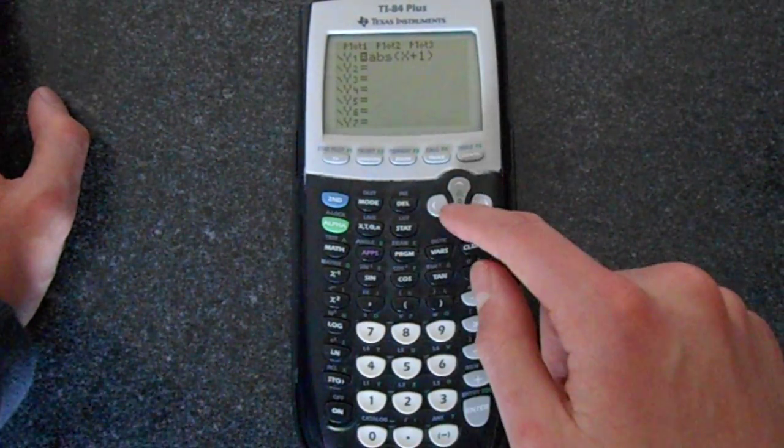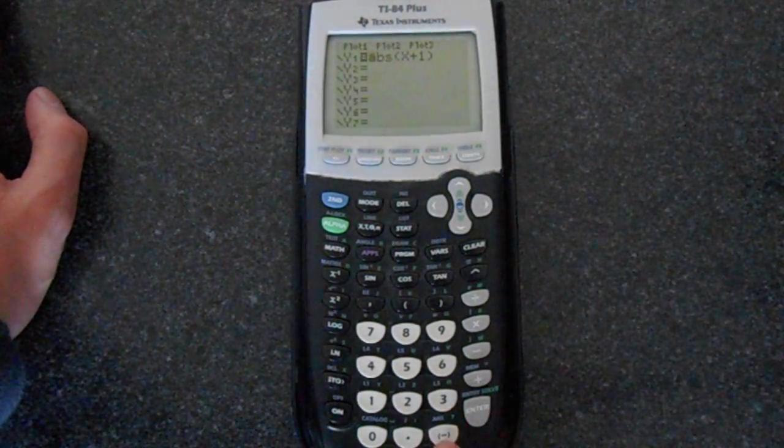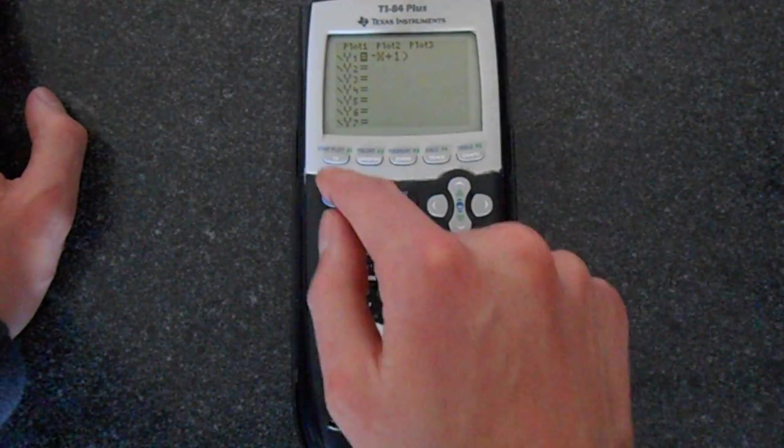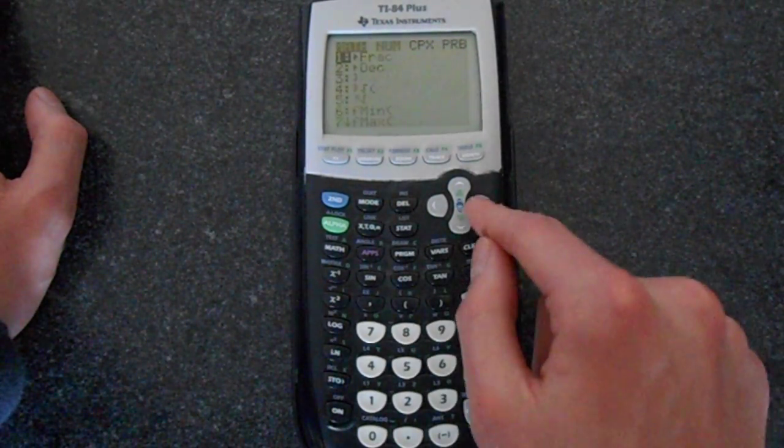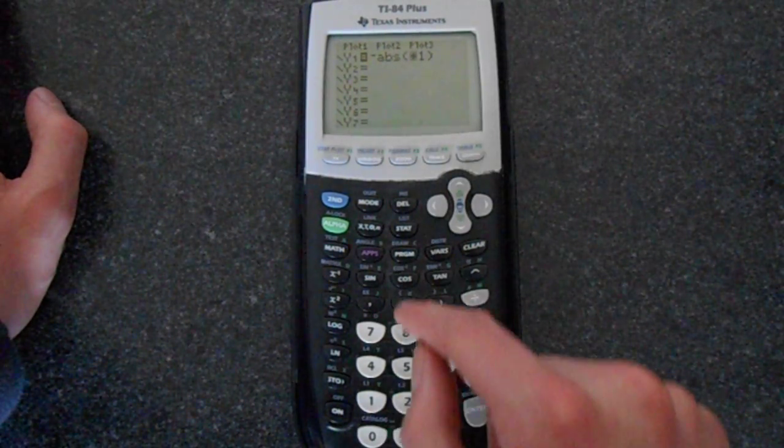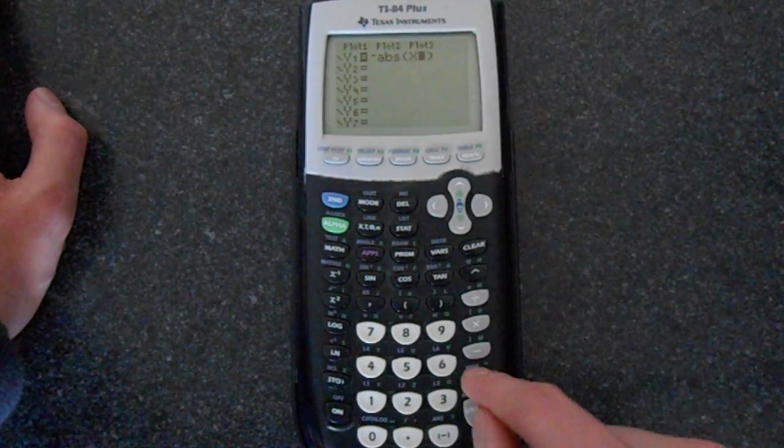Let's imagine we wanted to do negative. So you would use this key here. I'll just type it all again. And then we've got x plus one.